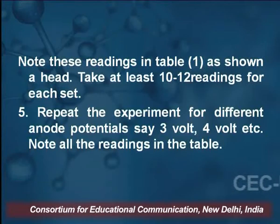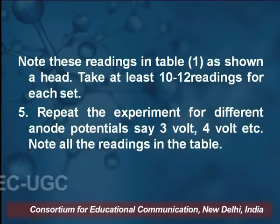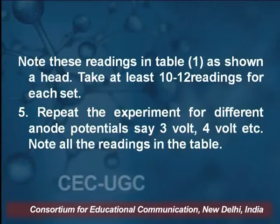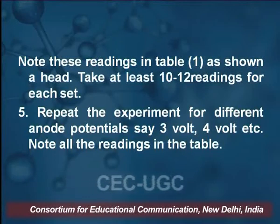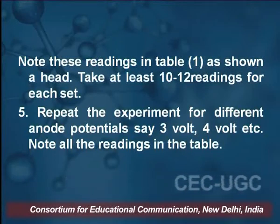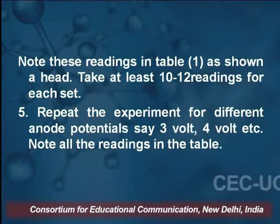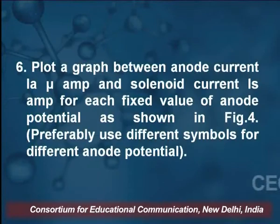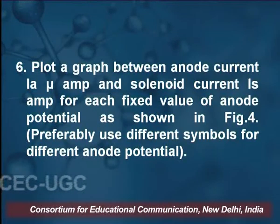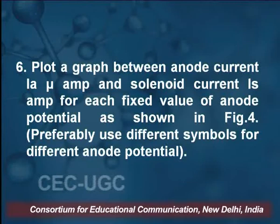Then repeat this experiment for anode potentials of 3 volts, 4 volts, and so on, noting all the readings. We will have 3 sets of readings at anode voltages of 2, 3, and 4 volts.